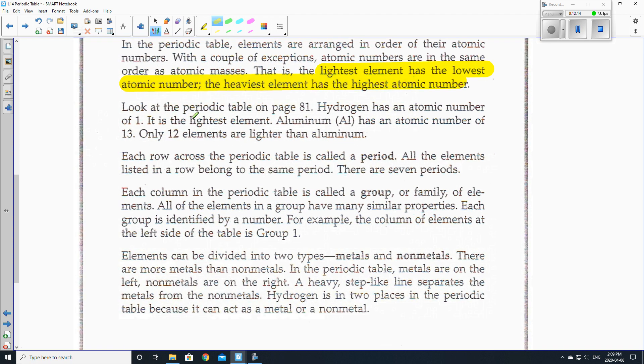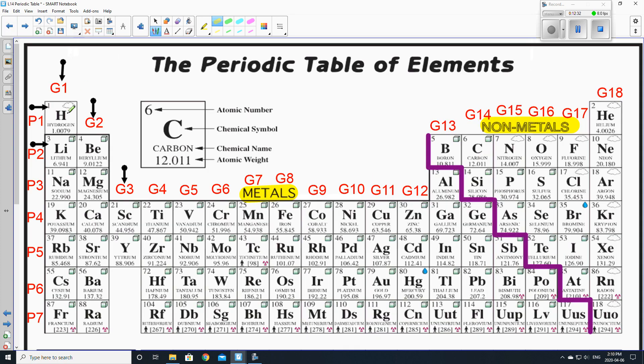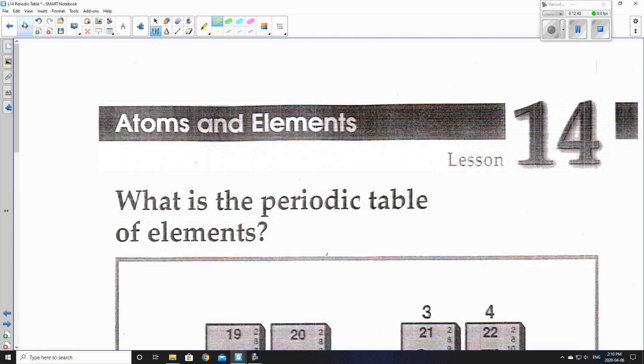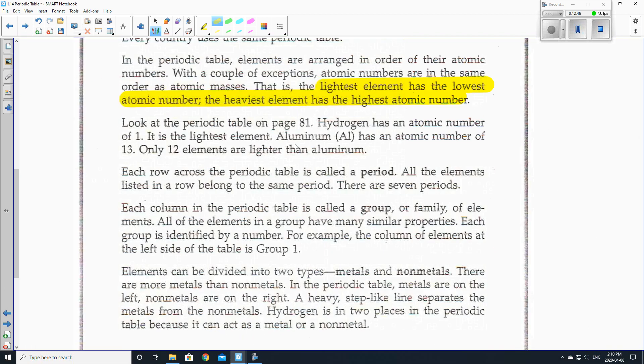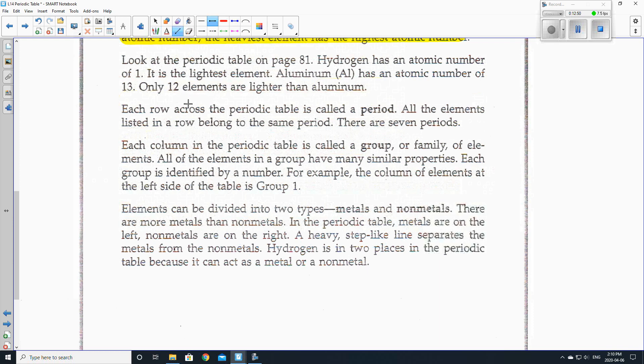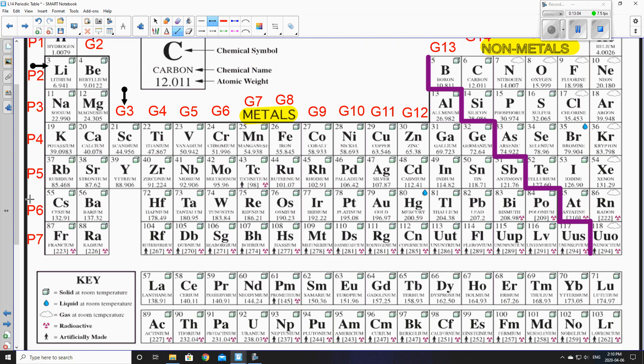Look at the periodic table on page 81. Hydrogen has an atomic number of 1. It is the lightest element. Aluminum, Al, has the atomic number of 13. Only 12 elements are lighter than aluminum. So rather than looking at page 81, let's just look at this. So hydrogen is right here. This is the atomic number 1. And then the handout also talks about aluminum. And it's number 13. That's the atomic number. Each row across, going this way, the periodic table is called a period. All the elements listed in a row belong to the same period. There are seven periods. So let's just take a look at that. Here are seven periods. Periods 1 through 7 right there.